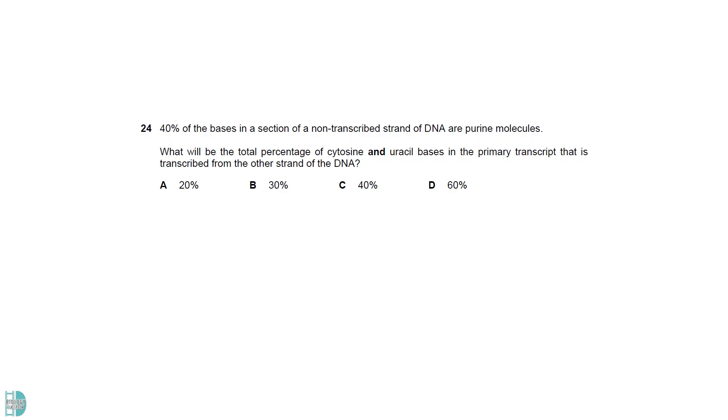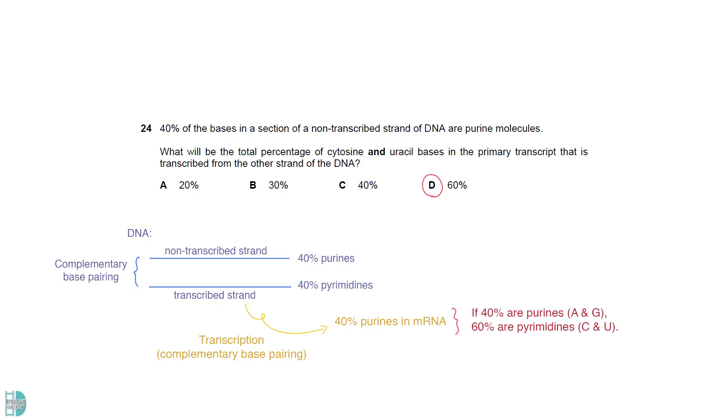If 40% of the bases in the non-transcribed strand are purine, 40% of the bases on the transcribed strand would be pyrimidines. This also means that 40% of the bases on the mRNA are purine. This is because of the complementary base pairing rule. So, 60% of the bases on the mRNA are C and U, the pyrimidines.